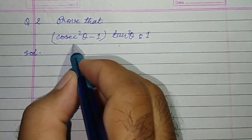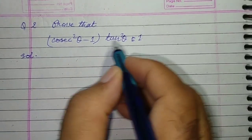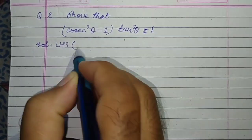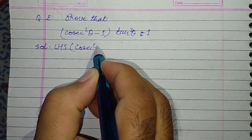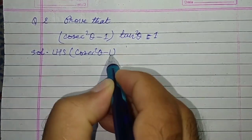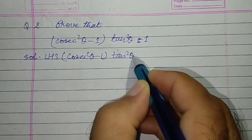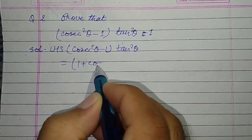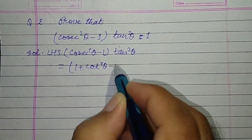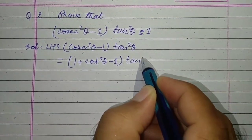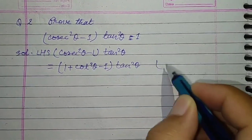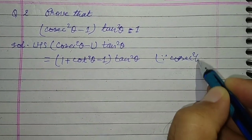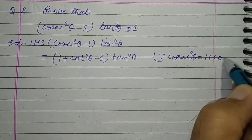There is a question: prove that (cosec²θ - 1) × tan²θ = 1. We have LHS: cosec²θ - 1 into tan²θ, which equals 1 + cot²θ minus 1, into tan²θ. Hence, cosec²θ = 1 + cot²θ.